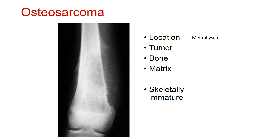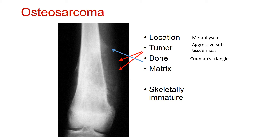Applying the four questions: the location is metaphyseal, the tumor has a very aggressive soft tissue mass, and the tumor-bone interaction shows the tumor moving far more aggressively than the bone can respond. There is a big soft tissue mass extending out of the bone. The bone is trying to respond with a Codman's triangle — where the periosteum is lifted to create a triangular shape — but cannot respond quickly enough. The tumor is also forming a hair-on-end pattern. The matrix throughout is osseous. Again, a skeletally immature patient under 30, with a very aggressive bone-forming lesion, very little reaction, and an osseous matrix — osteosarcoma.